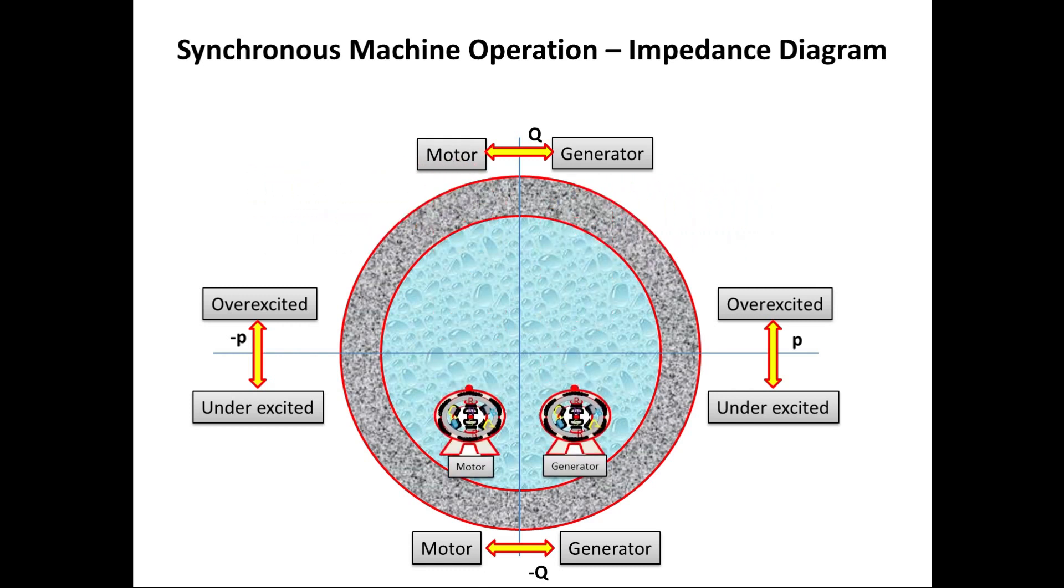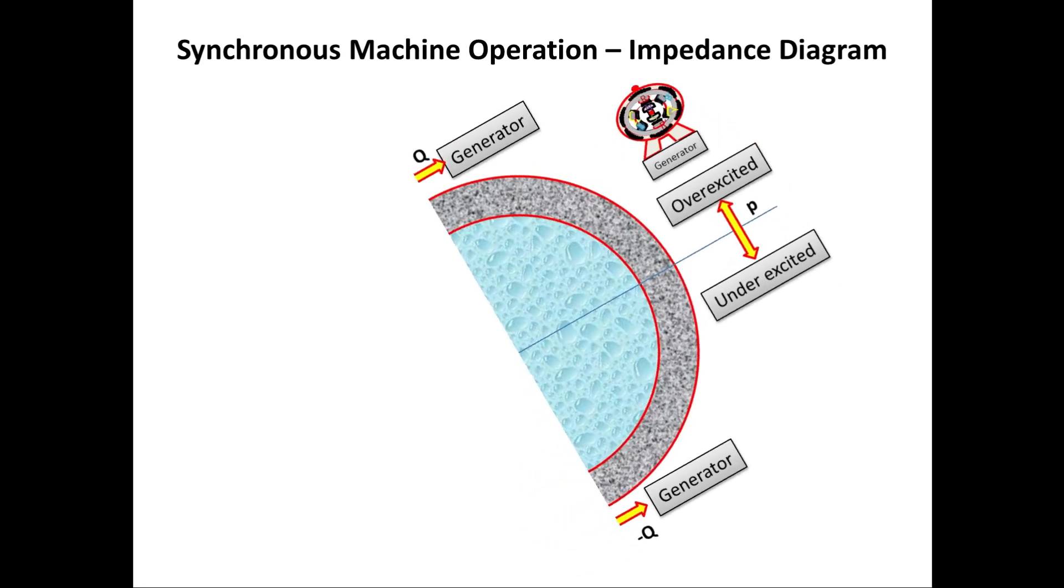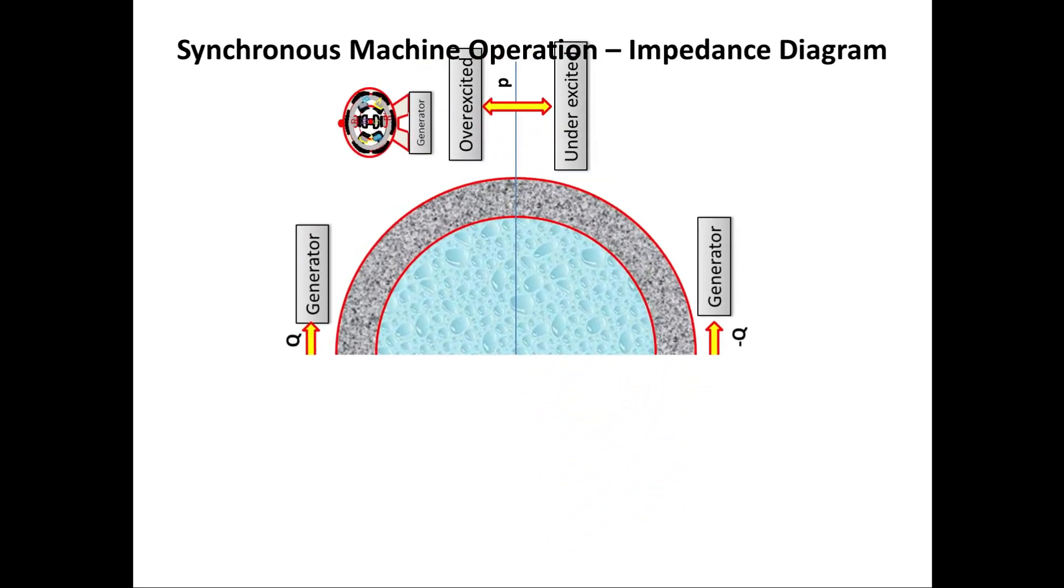Now we consider only in generator area. Just for easy understand, I rotate the graph and keep it like this. If the machine work only over this area, then we will say this as a generator.